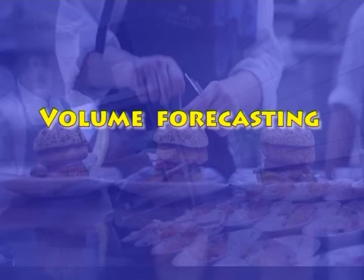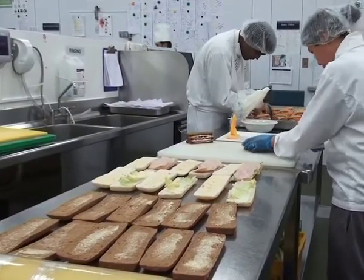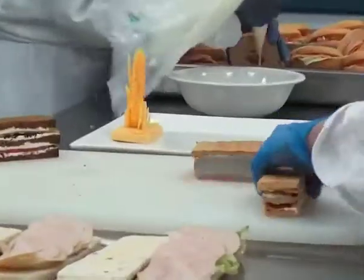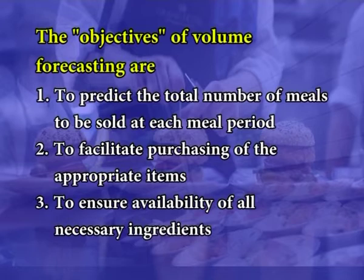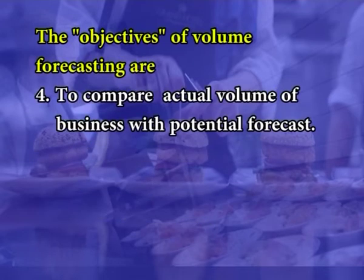Volume forecasting. Forecasting is using the available data to predict what is likely to occur in the future. In the food industry, which deals with highly perishable products, this advanced planning is very important. The objectives of volume forecasting are to predict the total number of meals to be sold at each meal period, to facilitate purchasing of the appropriate items, to ensure availability of all necessary ingredients, and to compare the actual volume of business with the potential forecast.